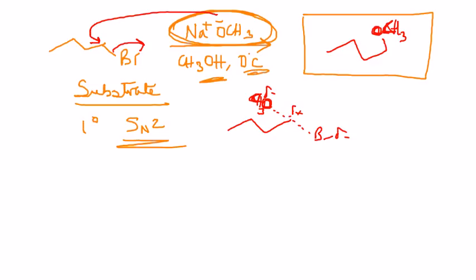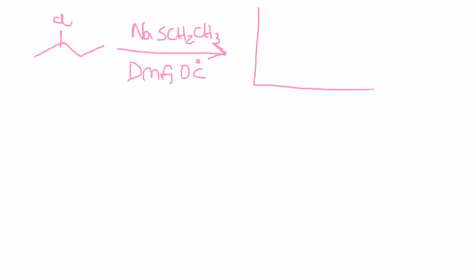We have here a secondary halide which is being treated with NaSCH2CH3, DMF, 0 degree Celsius. And you have to figure out what your products are. This is the case that I like to call a borderline case. It could go one way or the other. And the reason for that is because your starting material, the substrate, is a secondary halide.